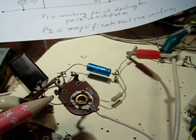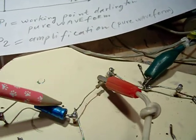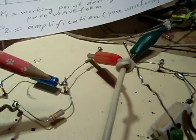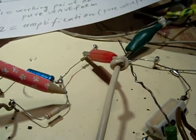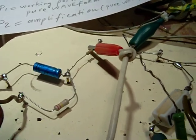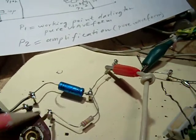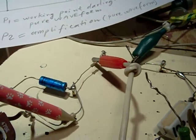This is the potentiometer to set the working point from the Darlington, and this is the filter. This also makes a part with the P1. This is this resistor here.